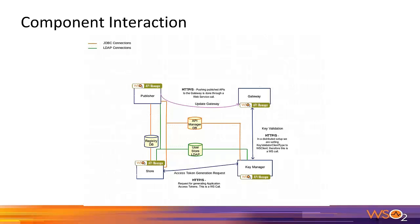Now let's look at how the components interact. We have four components — Store, Publisher, Gateway, and Key Manager — and three main databases: the API Management database, the Registry database, and the User Store. In the API Publisher flow, when a publisher publishes an API, it saves metadata to the registry database and pushes a Synapse API artifact to the API Gateway. Some metadata is then accessible through the API Store.